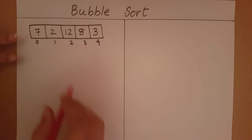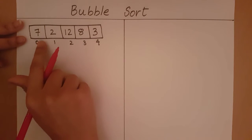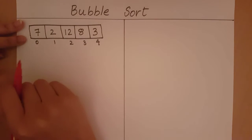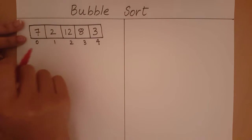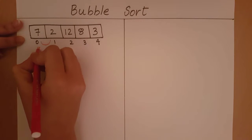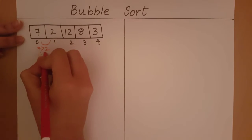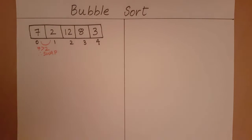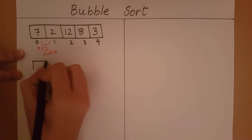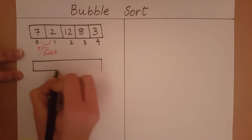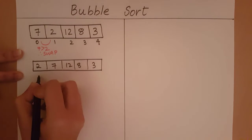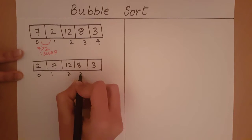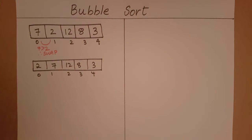First, let's compare these two: 7 and 2. 7 is greater than 2, and so 7 should come to the right of 2. This is not the correct order in which these two elements are placed. 7 is greater than 2, therefore we swap. Let's see how the array looks after having swapped. Now we have swapped those two elements.